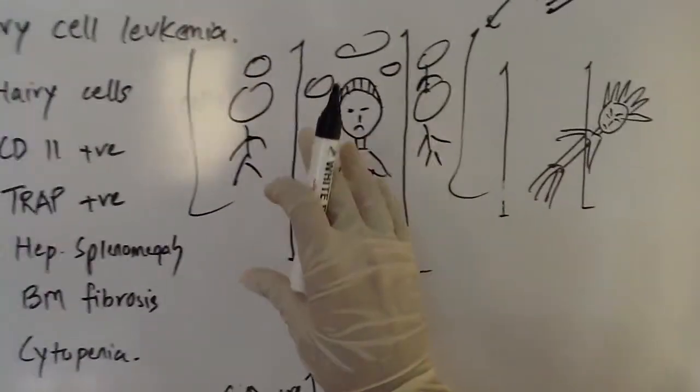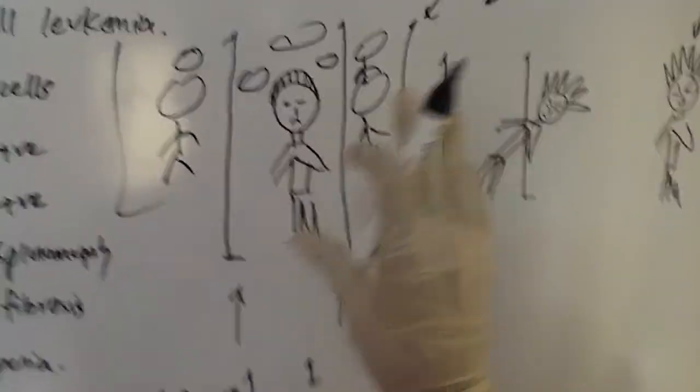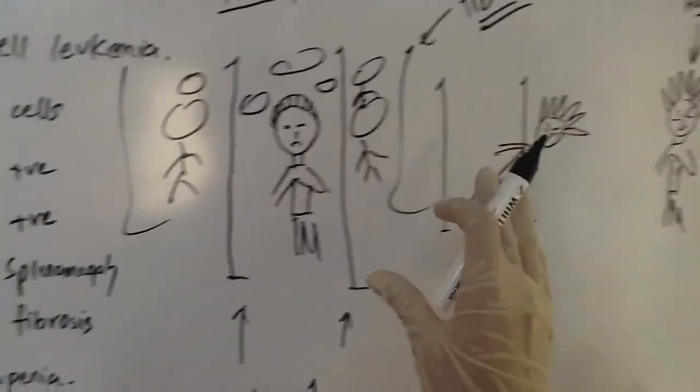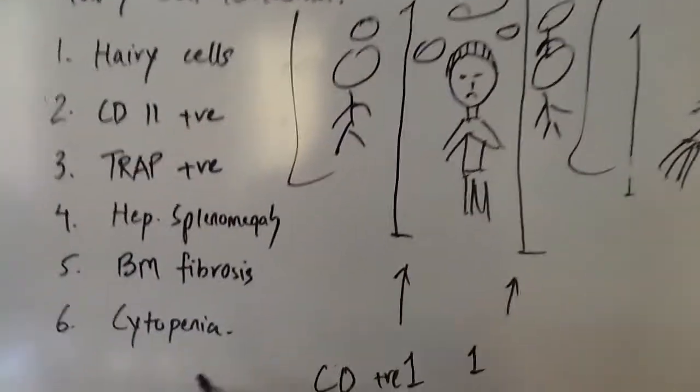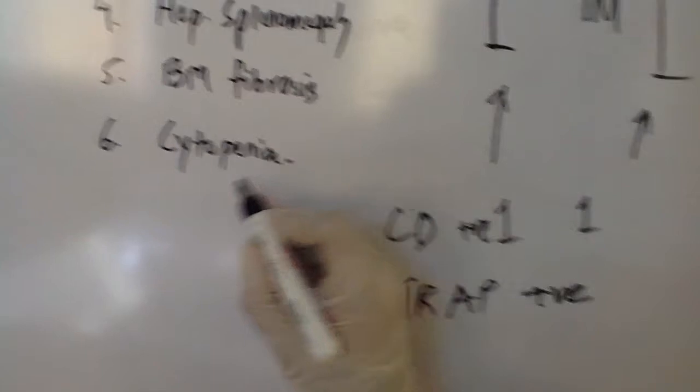And since all these lymphocytes are trapped inside the bone marrow, none of them can escape into the blood. And since they cannot escape into the blood, you have cytopenia.